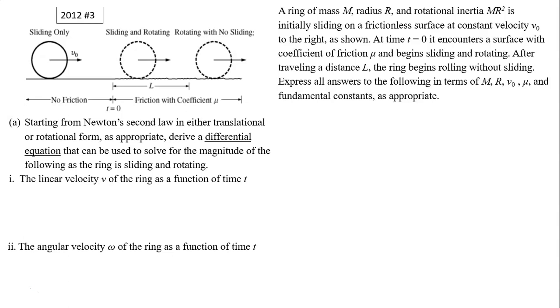Part A: Starting from Newton's second law in either translational or rotational form as appropriate, derive a differential equation that can be used to solve for the magnitude of the following as the ring is sliding and rotating. First, the linear velocity v of the ring as a function of time. They tell you, starting from Newton's second law, and this is linear velocity, so you have to use translational form, which is net force equals ma.